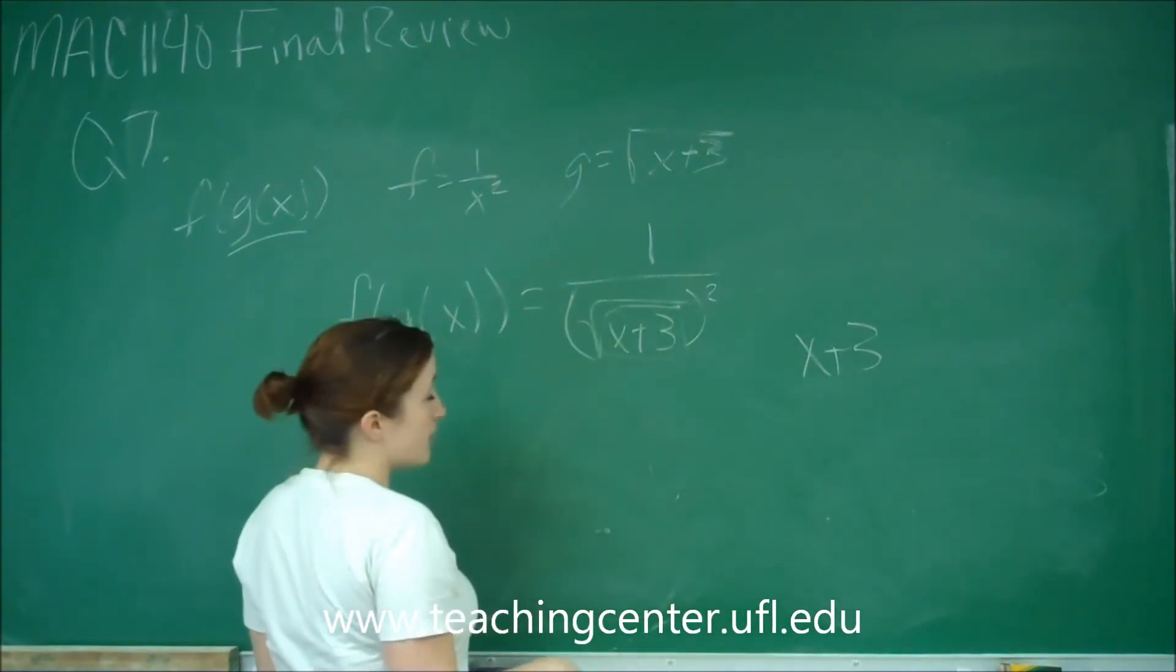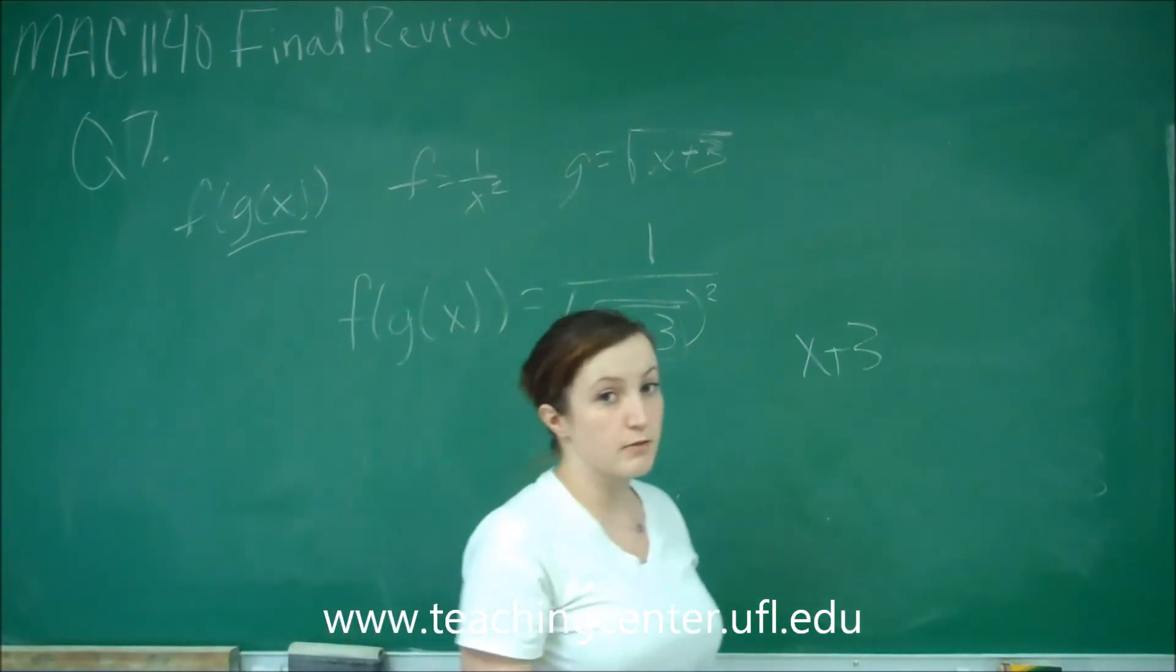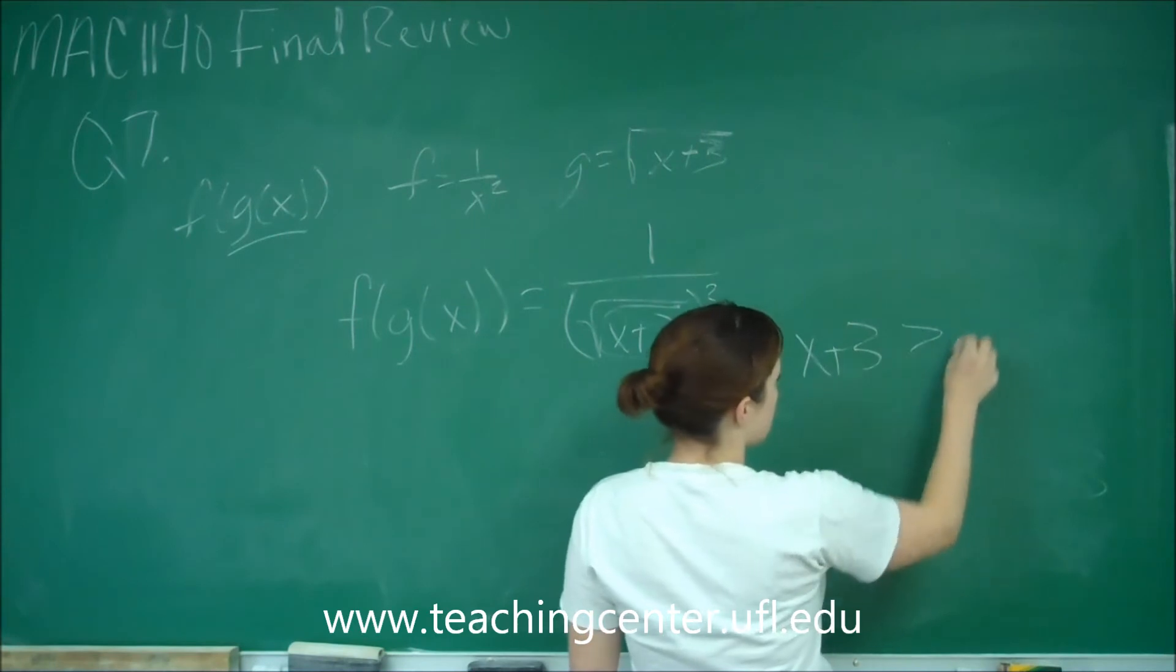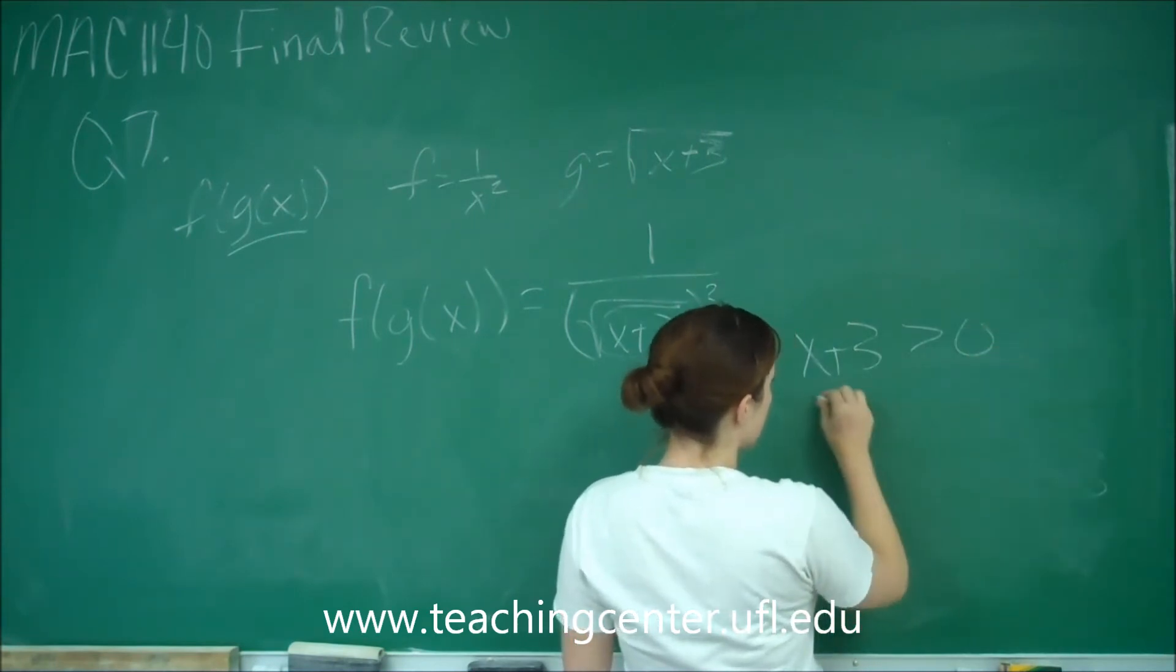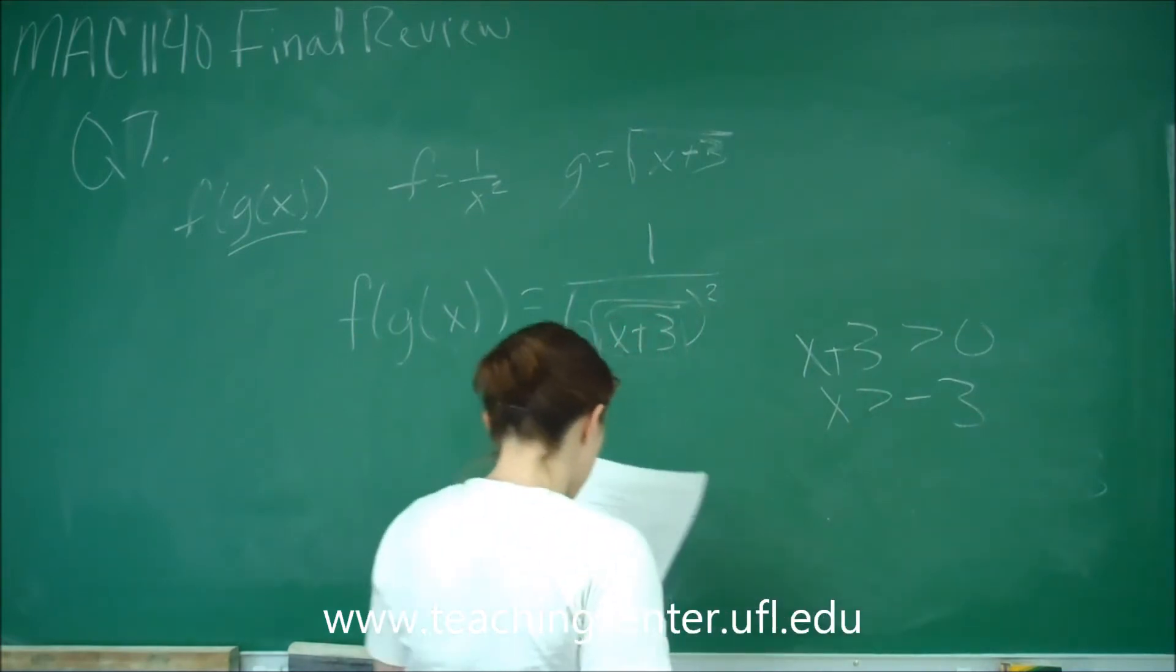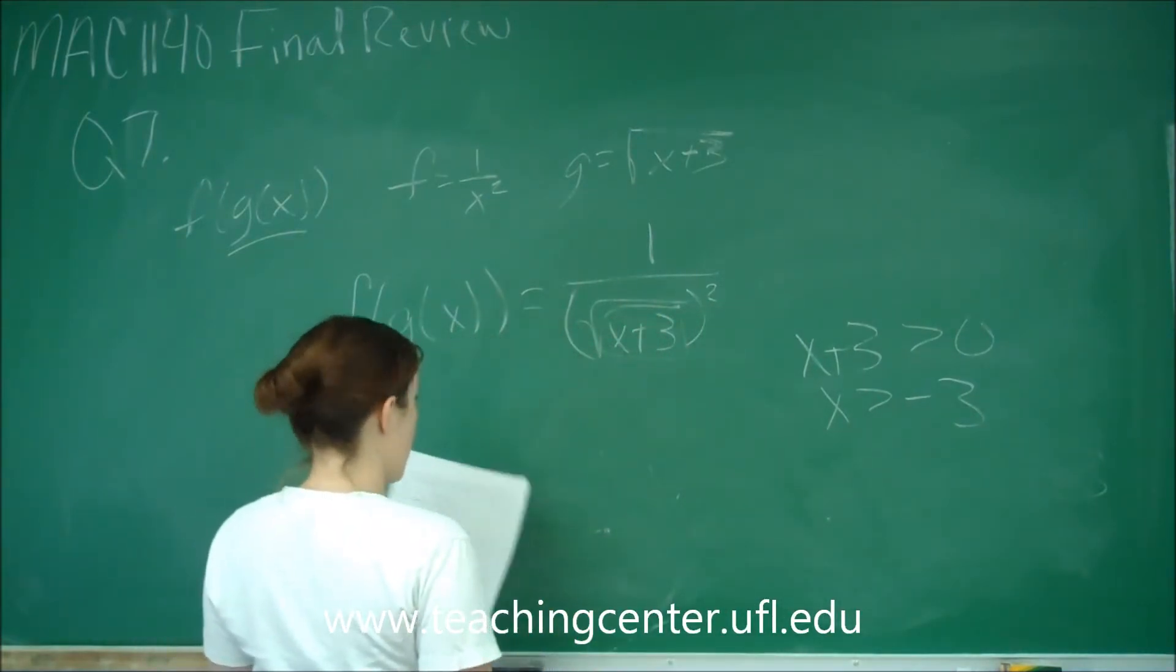And not only because it's in the denominator, we know that that can't equal zero, but we also know that x plus 3 cannot be less than zero, because we can't take the square root of a negative. So x plus 3 has to be greater than zero. So we just get that x has to be greater than negative 3, and that's our domain.